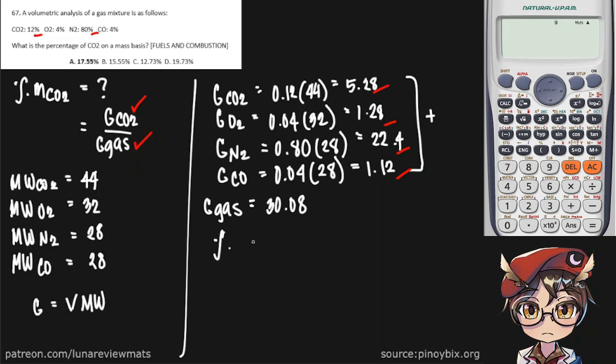We can simply start putting the values in. 5.28 divided by 30.08, that is 0.1755, which is equal to 17.55%, and that is our final answer.